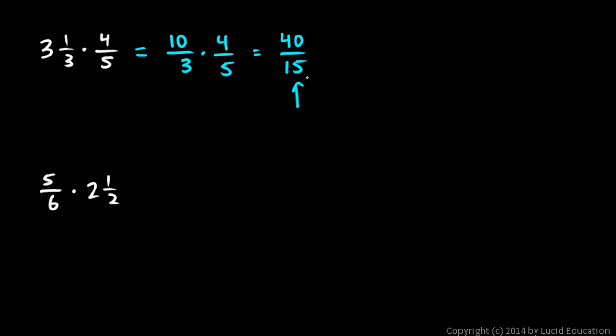And then the result here can be simplified. The numerator and denominator are both divisible by 5, so let's do that. And 40 divided by 5 is 8, and 15 divided by 5 is 3. So 8 thirds is the answer, and that's correct. But since the problem was stated as a mixed number, let's go ahead and put the answer as a mixed number. So 8 thirds you can probably see is the same as 2 and 2 thirds.